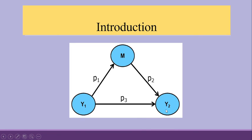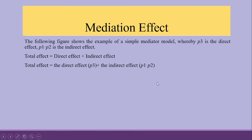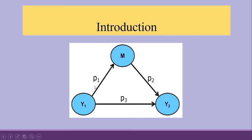Y1 is affecting Y2 through P3, where P3 is a path coefficient, and Y1 is also affecting Y2 through M, where M is the mediator. Y1 affecting M has path coefficient P1, and M affecting Y2 has path coefficient P2. So the combined indirect effect is P1 multiplied by P2. The total effect equals the direct effect P3 plus the indirect effect P1 times P2.